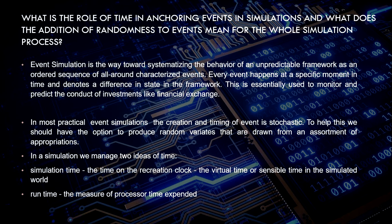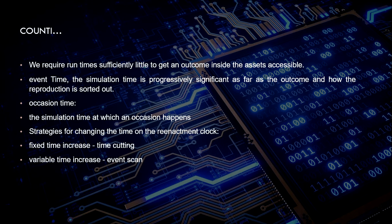In most practical event simulations, the creation and timing of events is static. To support this, we should have the option to produce random variables drawn from the operation's distribution. In simulation, we manage two ideas of time: simulation time, which is the time on the recreation clock or virtual time in the simulator; and runtime, which is the measure of processor time used. We require sufficient runtime to get an outcome within the available assets. Simulation time is more significant in terms of output outcome and how the reproduction is organized. Occasion time is the simulation time at which an event occurs, and strategies include fixed time increments like time-slicing and variable time increments like event scanning.